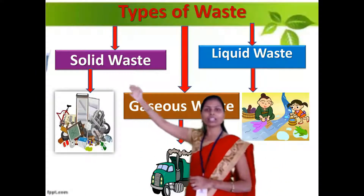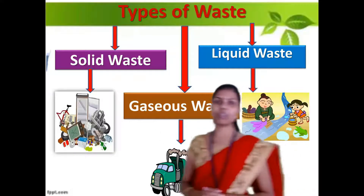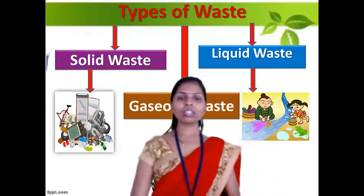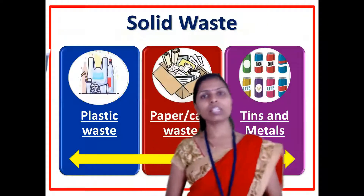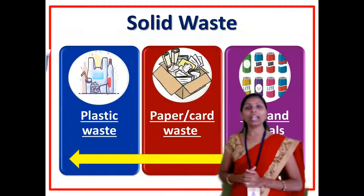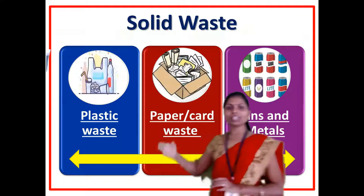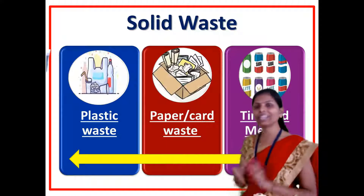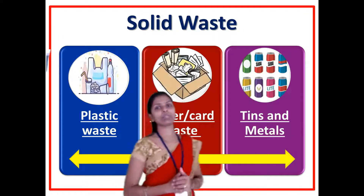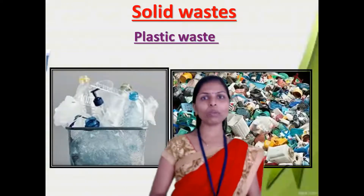The first one is solid waste, the second one is liquid waste, and the third one is gaseous waste. So solid waste contains different types of plastic waste — plastic materials and plastic bags. The second is paper or card waste, which contains many different types of papers. And the third is different types of things and metals.